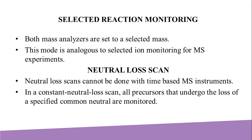The second scan experiment is selected reaction monitoring (SRM). Both mass analyzers are set to a selected mass. This mode is analogous to selected ion monitoring for MS experiments. SRM is a method in which an ion of a particular mass is selected in the first stage of a tandem mass spectrometer, and a product ion from fragmentation of the precursor ion is selected in the second stage for detection.